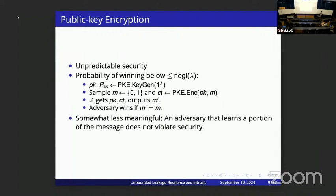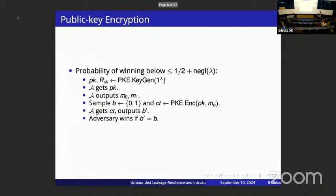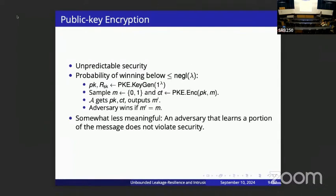A weaker notion of security for PKE is unpredictability security, where the adversary gets the public key and a ciphertext of a random message, and shouldn't be able to completely recover the encrypted message. This is weaker than the previous notion — you could learn some parts of the message without violating security.